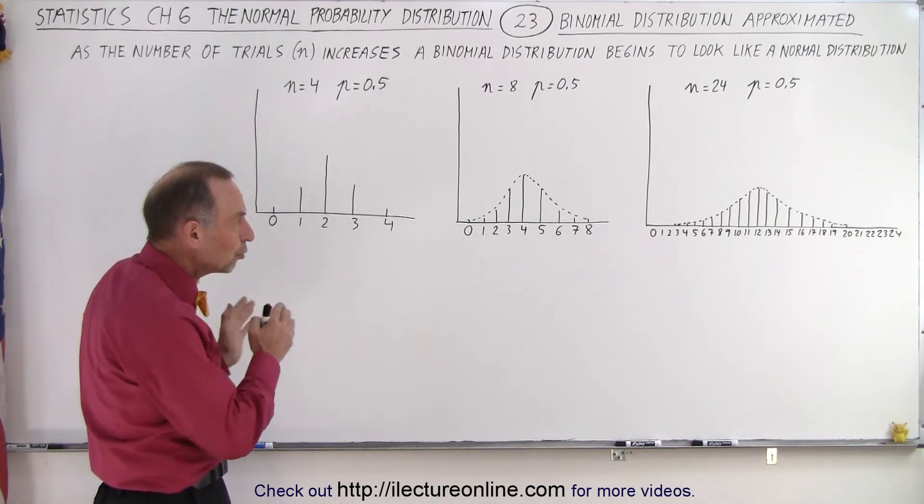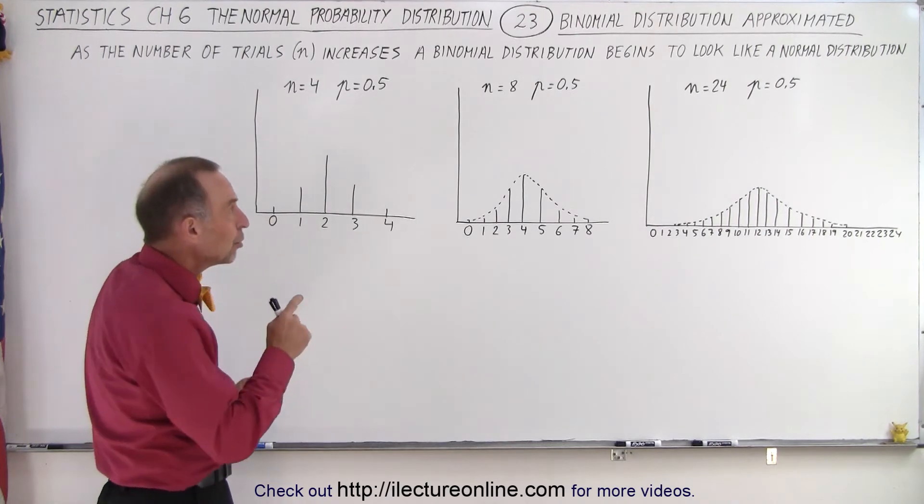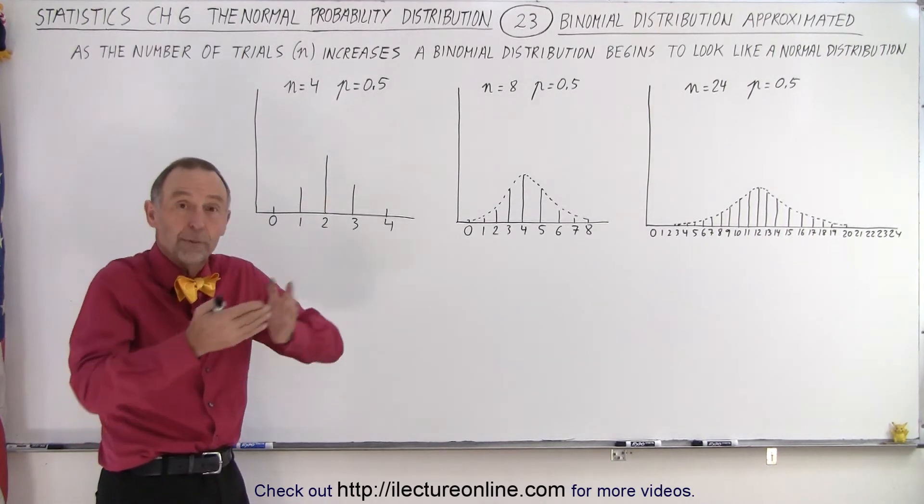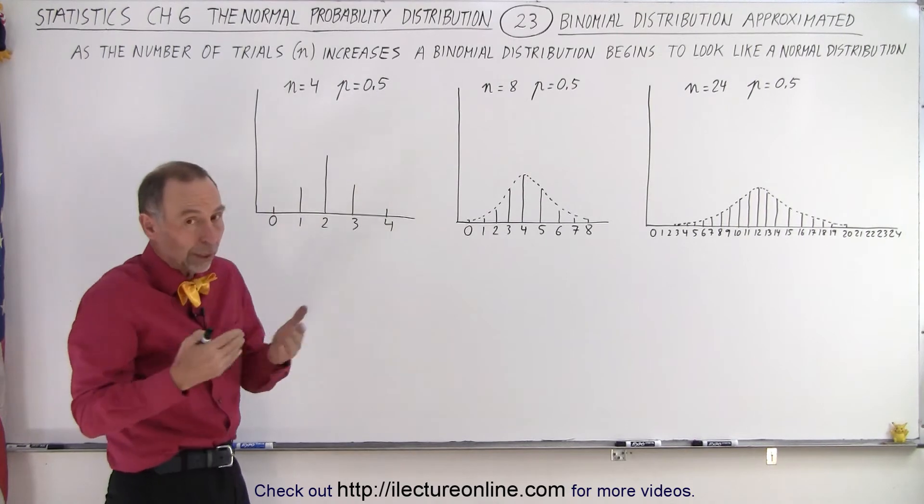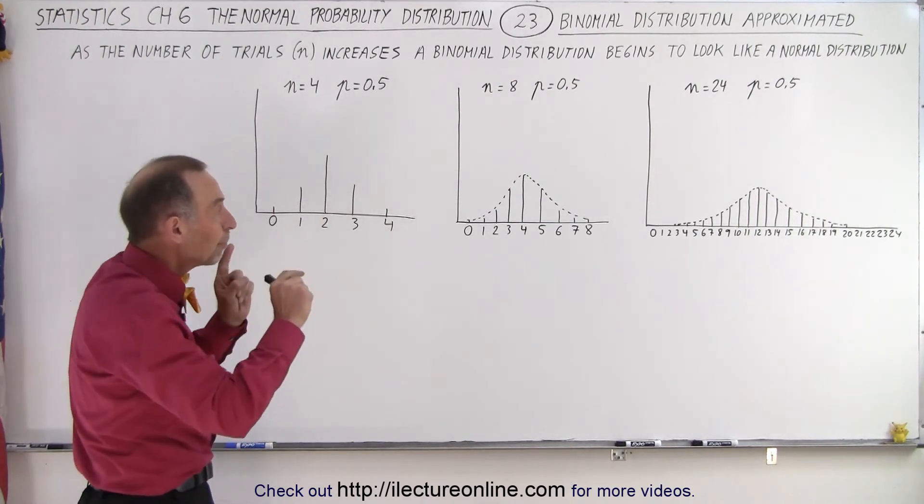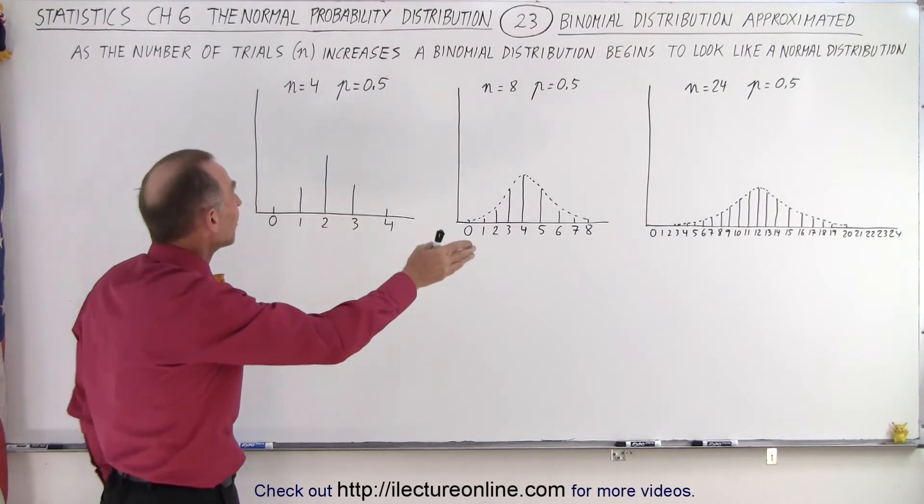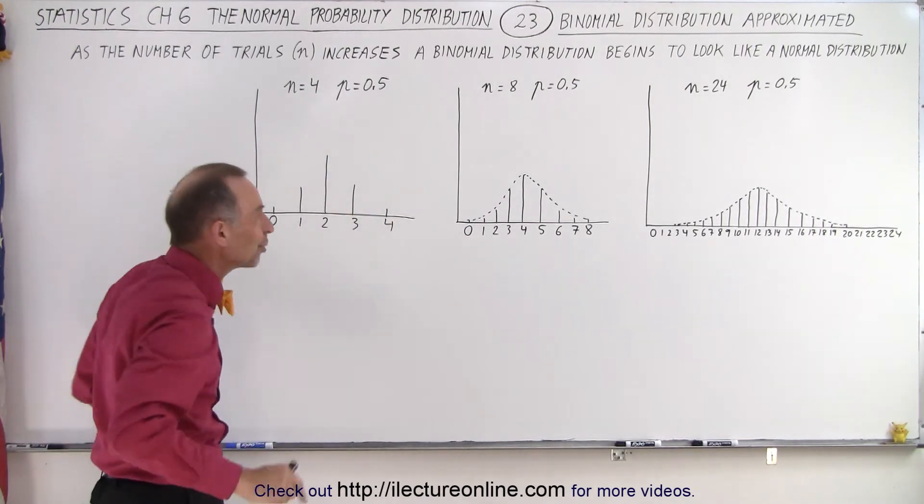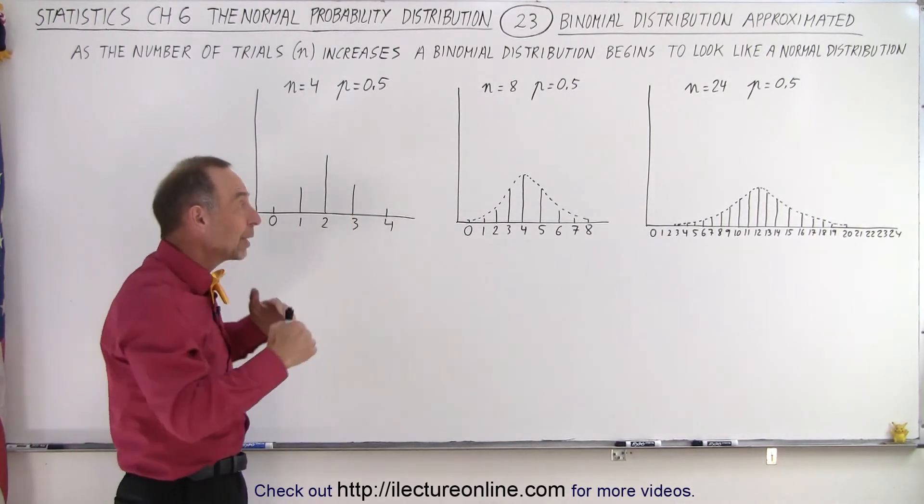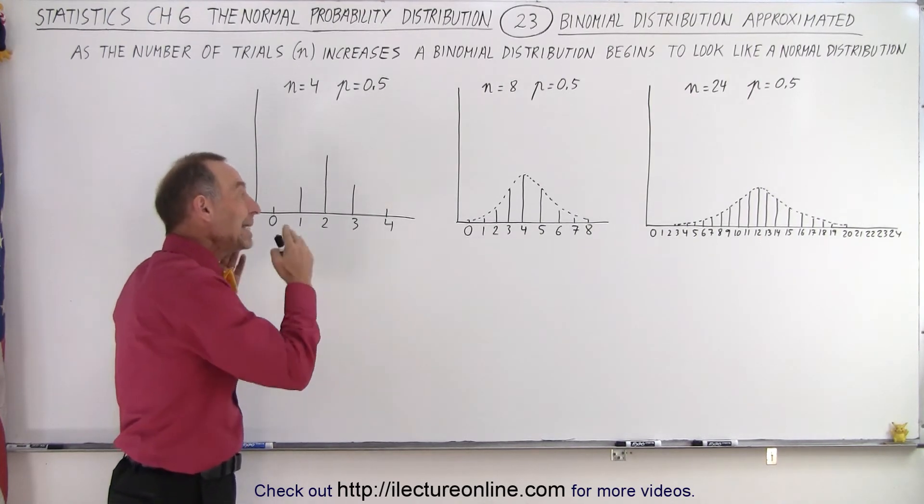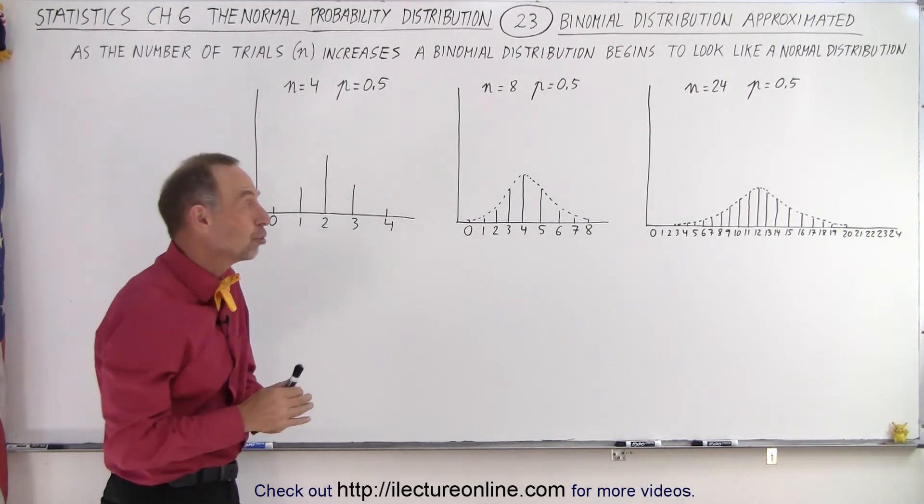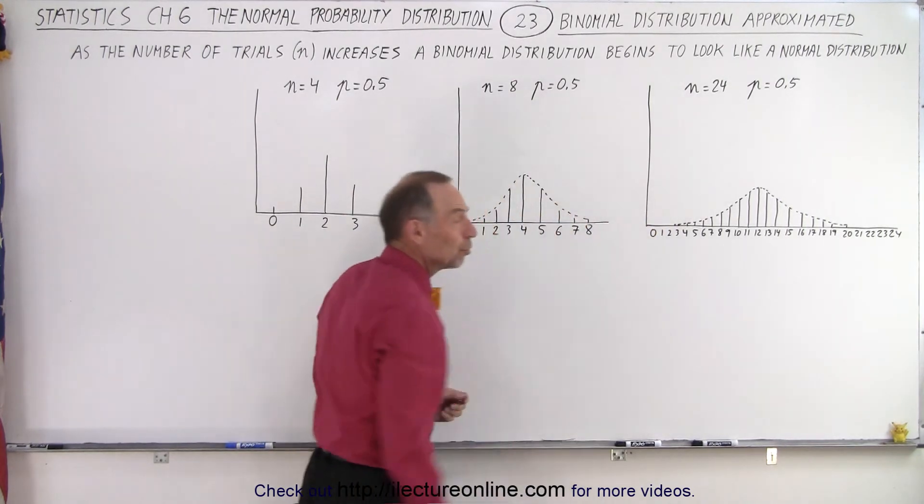If we can use the same techniques that we use in the normal distribution to find probabilities, which we've been doing in the previous videos and which is relatively straightforward, we can apply those same techniques to the binomial distribution. This way we can find probabilities way easier with a binomial distribution using the techniques of the normal distribution.